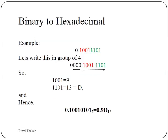Now let us see the fractional conversion from binary to hexadecimal. It is the same as binary to octal, with the only difference being that instead of making groups of 3, here we make groups of 4, starting from the left-hand side after the decimal point. For the number 0.10011101: 1001 is binary equivalent to hex 9, and 1101 is 13, which in hexadecimal is D. So 0.10011101 binary is converted to 0.9D in hexadecimal.